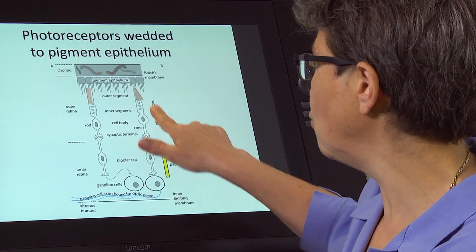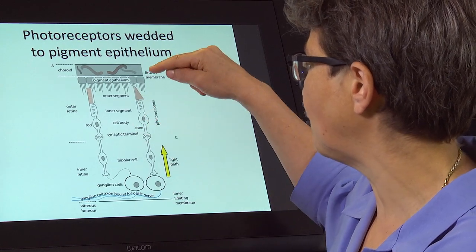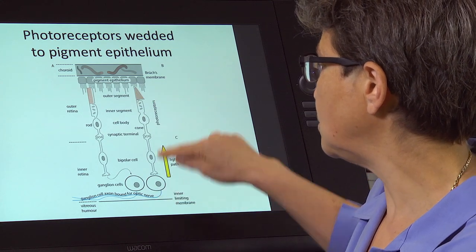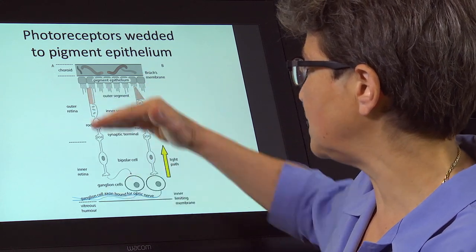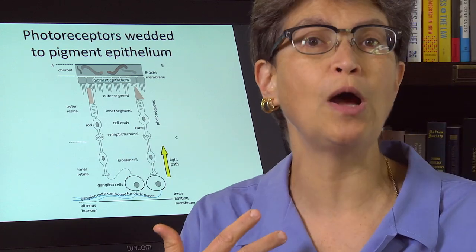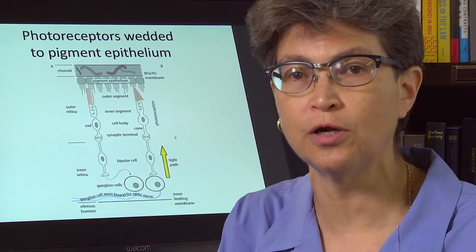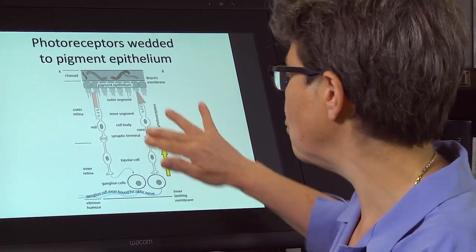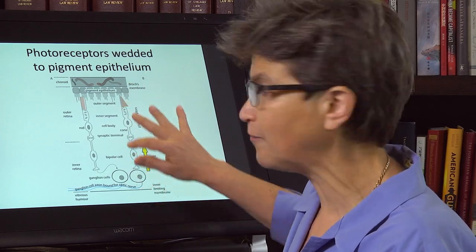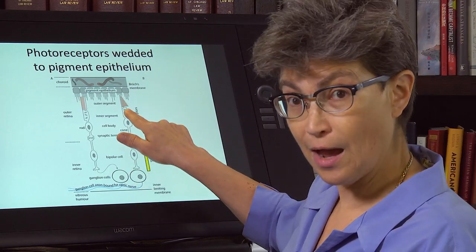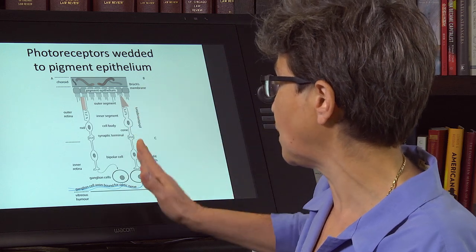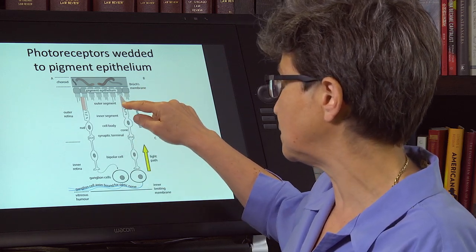So why would you put the receiving end here rather than here? In order to do that, all of this has to be incredibly transparent, and it is. But what would be a strong enough selective pressure that would make you have to make all of this transparent so that light would travel without being altered, without being modified to the outer segments?